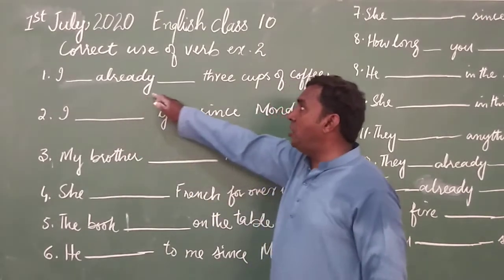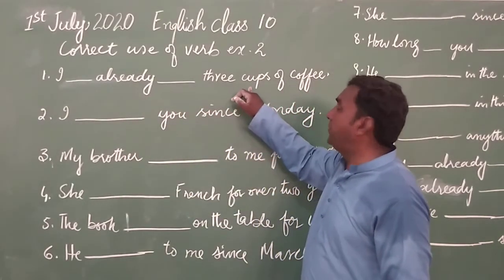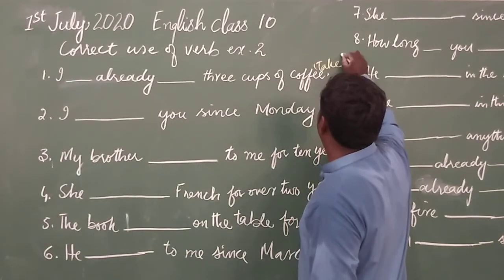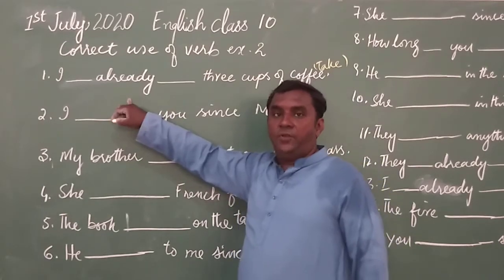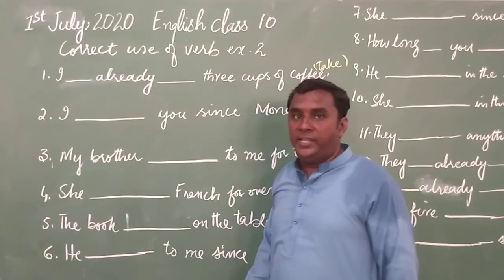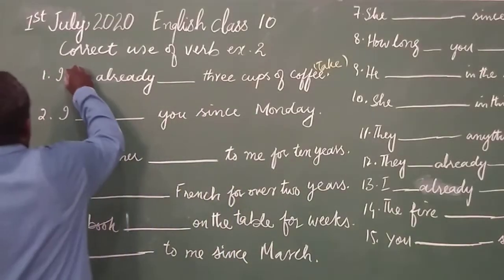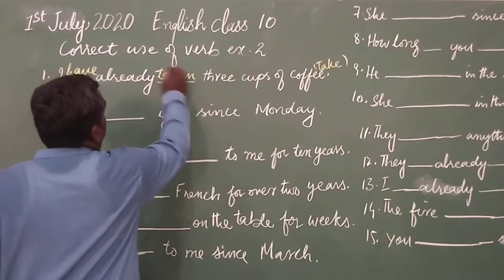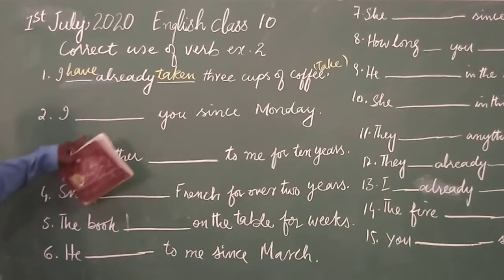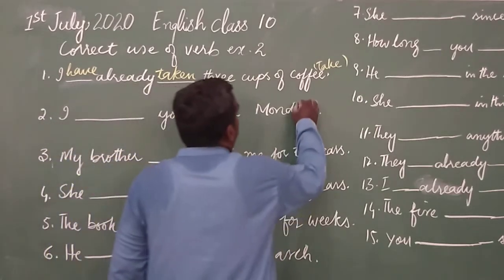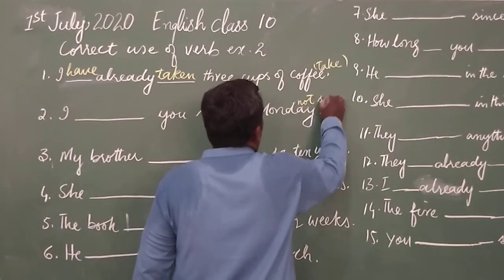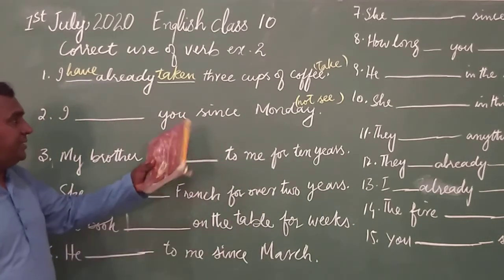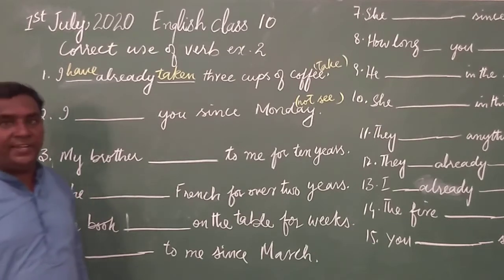Sentence number one: 'I dash already three cups of coffee' — here we have present perfect tense. The answer is: I have already taken three cups of coffee. Sentence two: 'I dash you since Monday' — we have 'not see' here, meaning since Monday I have not seen you. This is also present perfect tense.